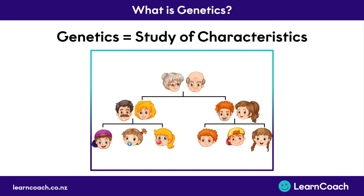So what is genetics? Genetics is the study of characteristics — why people and animals look like what they look like. You might have noticed that you look like a blend of your mother and your father's characteristics, and they in turn look similar to their parents. Looking at the family tree here, we can see one side of the family has blonde hair and passed that on to their kids, while the other side has ginger hair and passed that on to some of their kids.